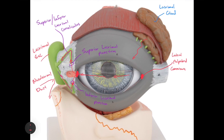The lacrimal secretions finally reach the inferior nasal meatus, where they are either evaporated or, if there's a large collection, cause your nose to run. That's why when you cry excessively or run in the wind and tear up, your nose runs — the excess lacrimal fluid drains through the nasolacrimal duct into the inferior nasal meatus. Those are all the landmarks of the eye.